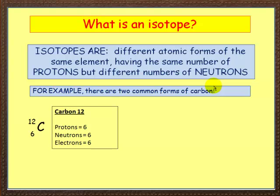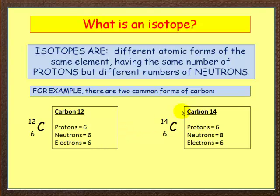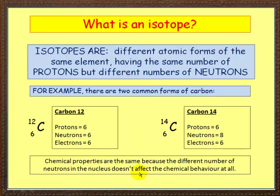Here's an example. There are two common forms of carbon. Looking at the periodic table, you'll see carbon is written as C, 6 and 12 — there's the mass number and atomic number. We know it's got 6 protons, 6 electrons, and the difference gives 6 neutrons. But there's a second form called carbon-14, which is a radioactive carbon form used in carbon dating. It has the same number of protons — 6 — but a different number of neutrons: 14 minus 6 is 8. Those are two isotopes, and importantly their chemical properties are the same — a different number of neutrons in the nucleus doesn't affect chemical behaviour at all.